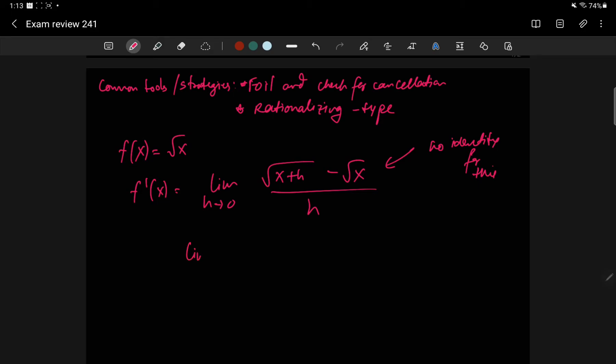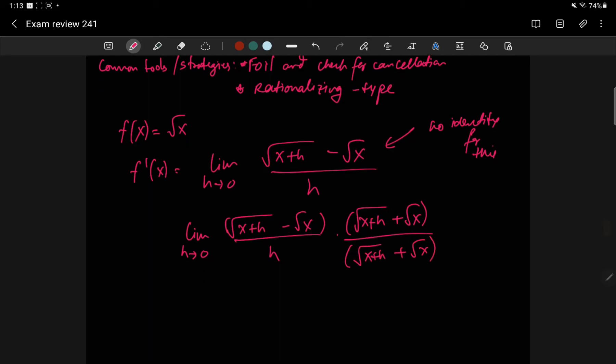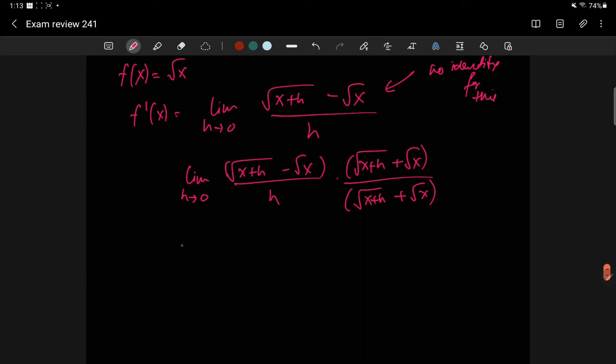Instead of an identity for square roots, what we do have is the ability to multiply by one and to rewrite that one in a creative way. The creative way is writing it as square root of x plus h plus root x over square root of x plus h plus root x and hoping that something nice happens.